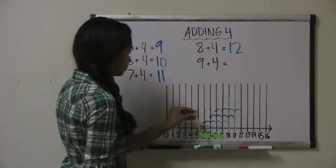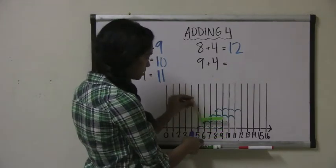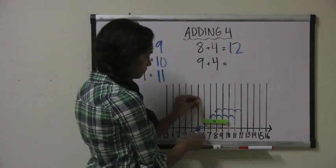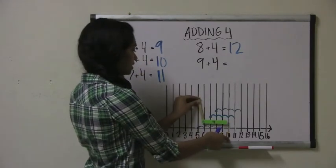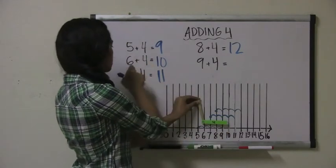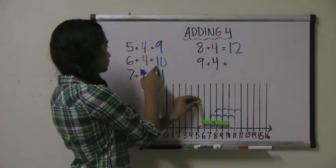Let's try 6 plus 4. Start with the number 6, jump 4 spots to get to the number 10. So 6 plus 4 equals 10.